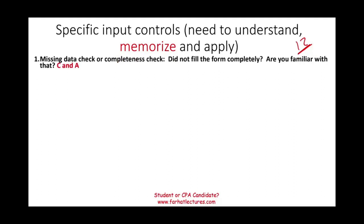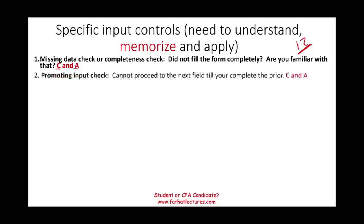The missing data check is an input control. Sometimes when filling out a form online and you try to submit, it says you did not complete the form. The form is programmed so that it doesn't complete the transaction until you input all necessary information — this promotes completeness and accuracy. A similar control is the prompting input check, where you can only answer one field at a time and cannot proceed until you've completed the previous question. Both controls basically promote completeness.